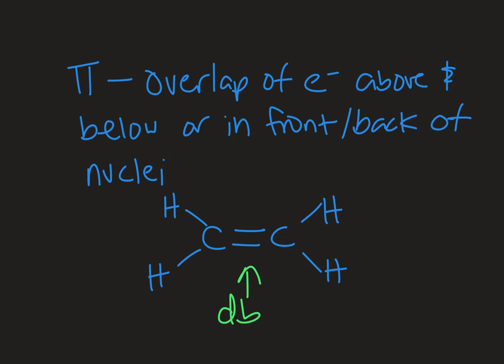But you can only fit one sigma bond. So one of these is a sigma bond, the other one is going to be a pi bond. From our Lewis structure, you can't tell which is which. It's just telling you that it's a double bond.